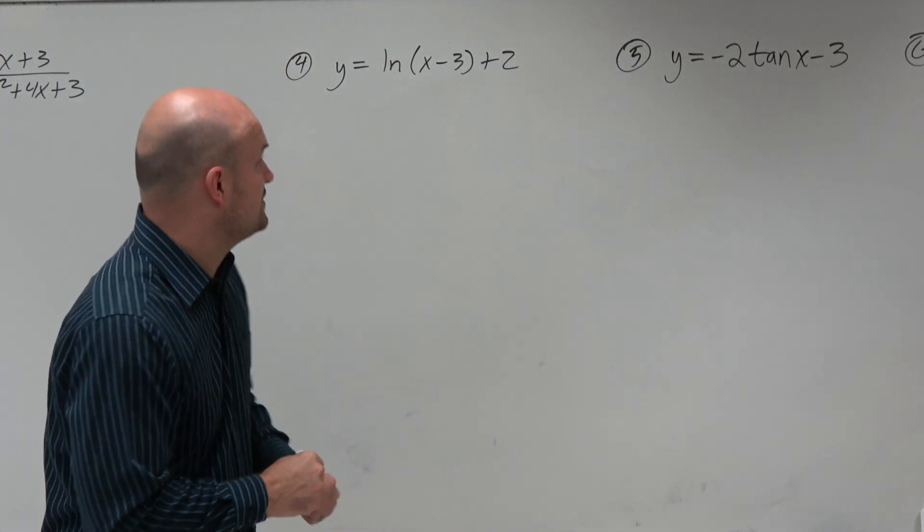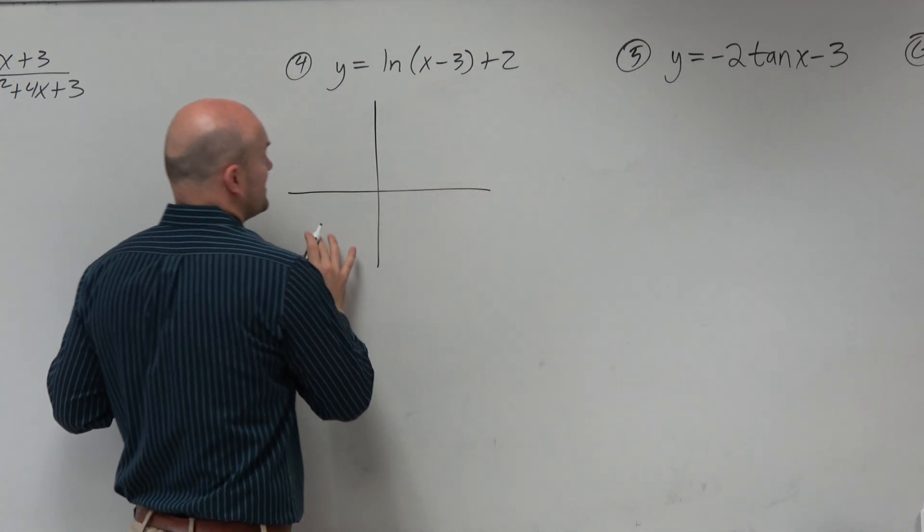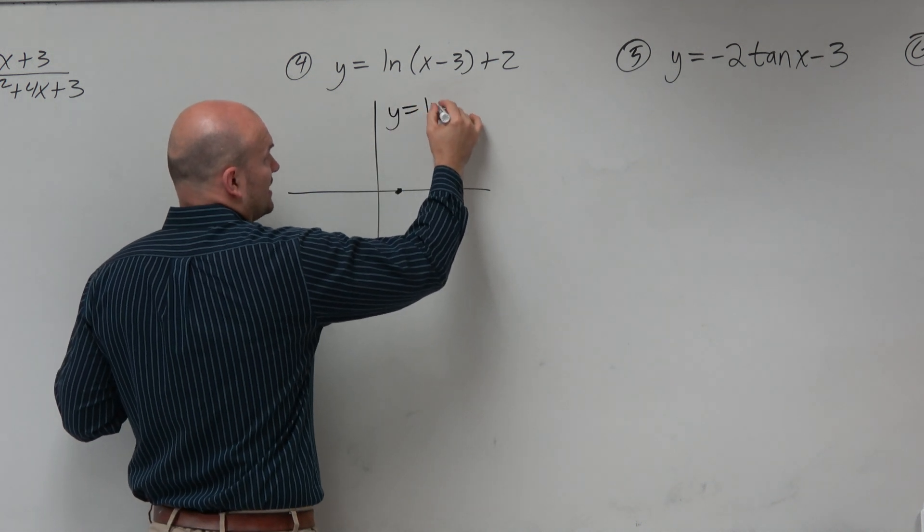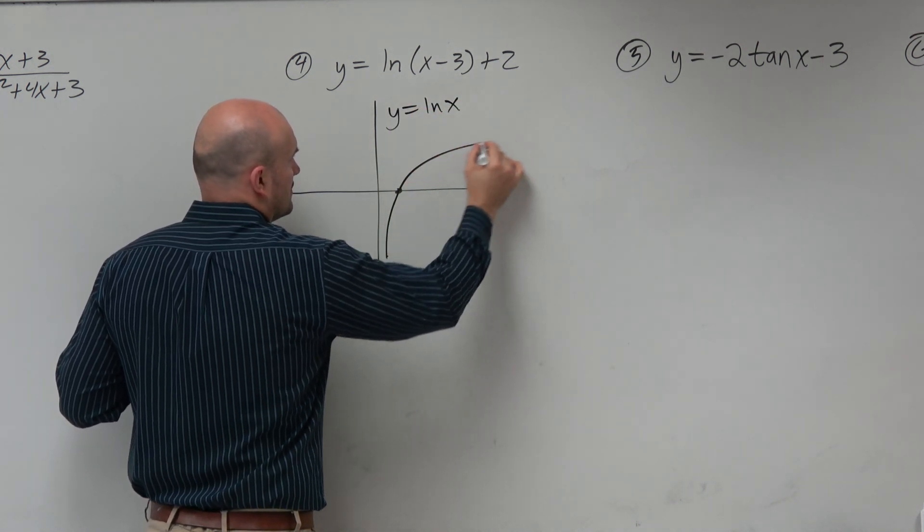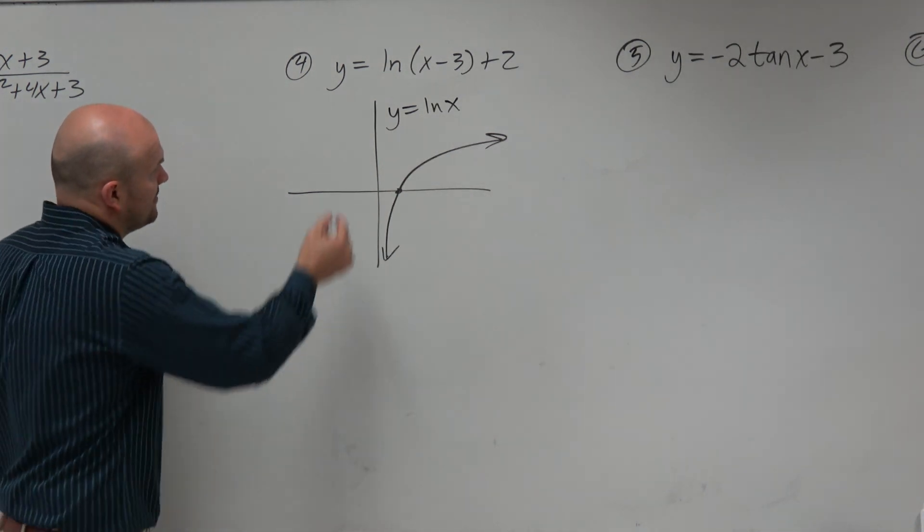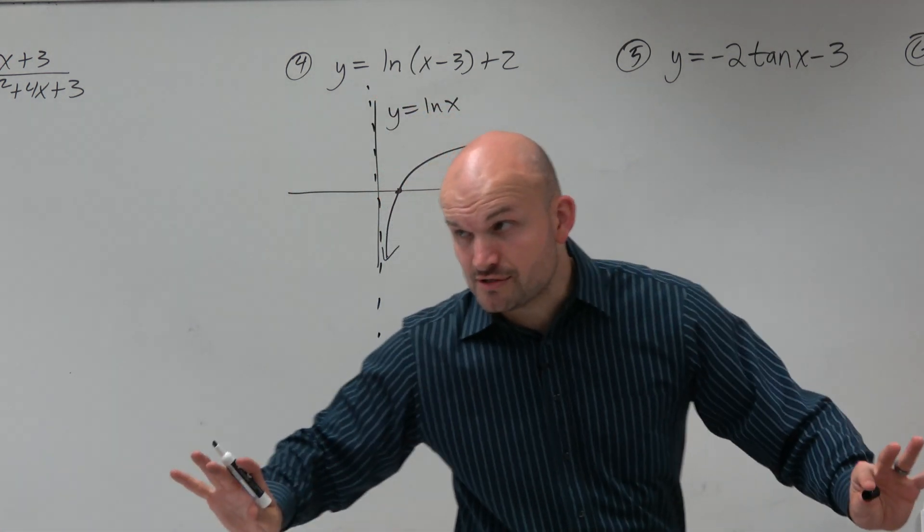So if we look at the logarithmic function, if you guys remember, just the parent graph, y equals ln of x, looks like that. And then also remember that there is a vertical asymptote there. So we just looked at this graph with no transformation.